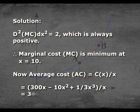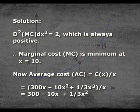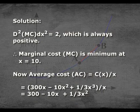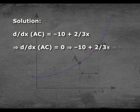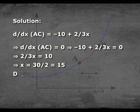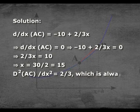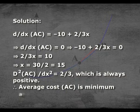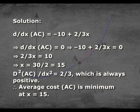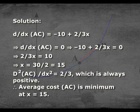Average cost AC = c(x)/x = 300 − 10x + (1/3)x². The first differentiation of AC = −10 + (2/3)x; setting d(AC)/dx = 0 gives (2/3)x = 10, so x = 15. The second differentiation d²(AC)/dx² = 2/3, which is always positive. Therefore average cost AC is minimum at x = 15.